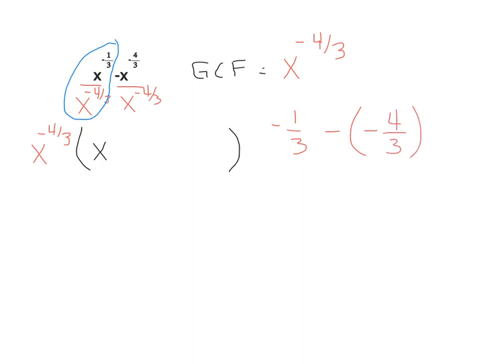So doing our arithmetic here, that'll stay negative one-third minus a negative will turn to plus four-thirds. And that'll result in three over three, which is just one. So we're going to have one x left inside.